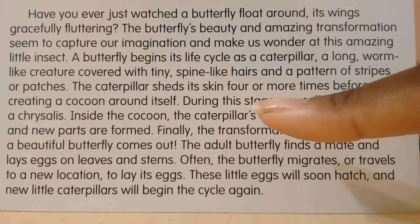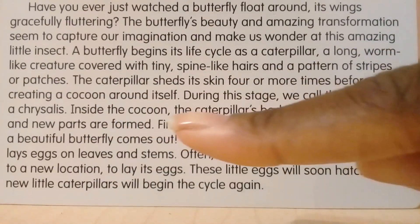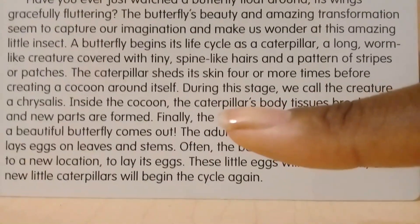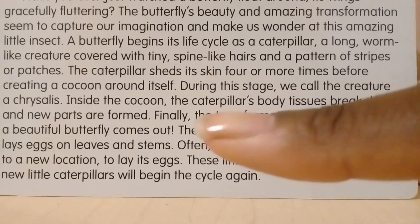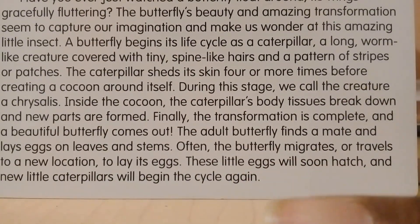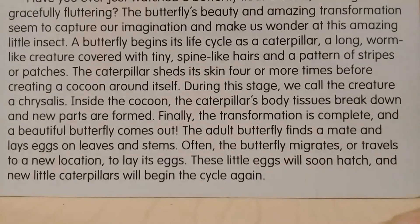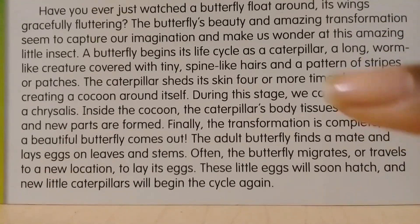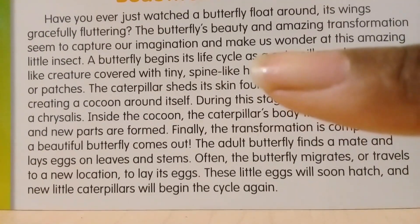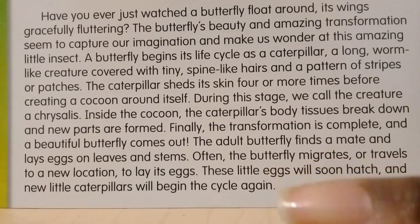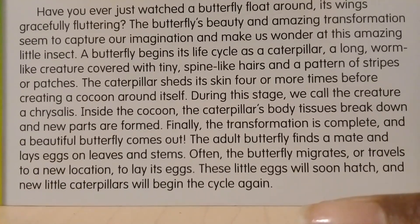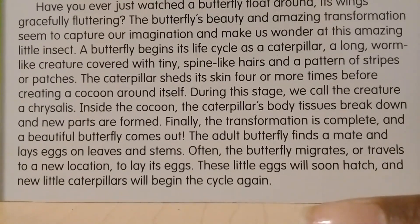Notice that it starts as a caterpillar, then it sheds its skin and creates a cocoon around itself — at that point it's called a chrysalis. Then it creates new body parts and comes out of the cocoon as a butterfly. Then the adult butterfly lays eggs and those eggs become caterpillars and the whole thing starts all over again. From the third sentence all the way to the end, it was all about how caterpillars turn into a chrysalis, which turns into a butterfly that lays eggs — and then the whole cycle starts again.